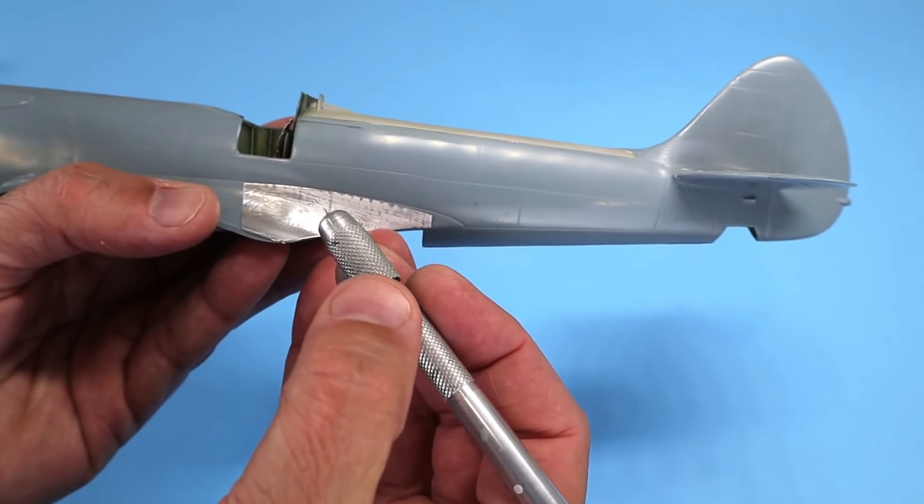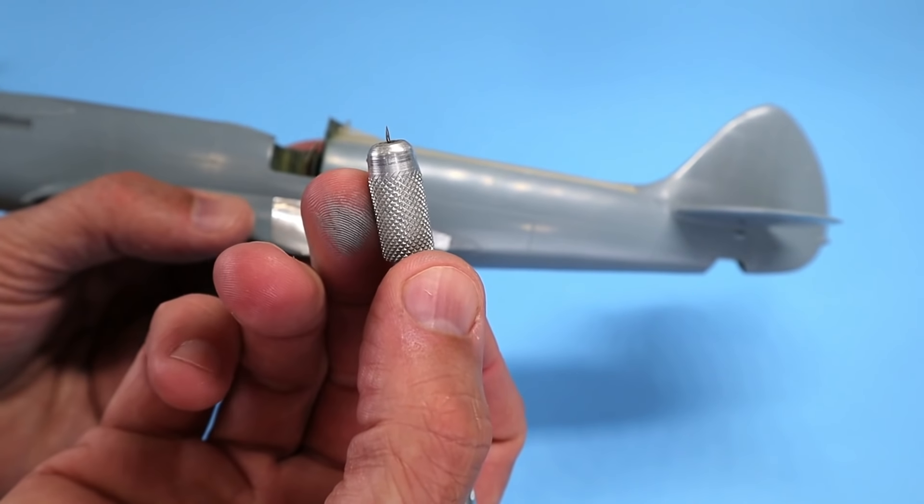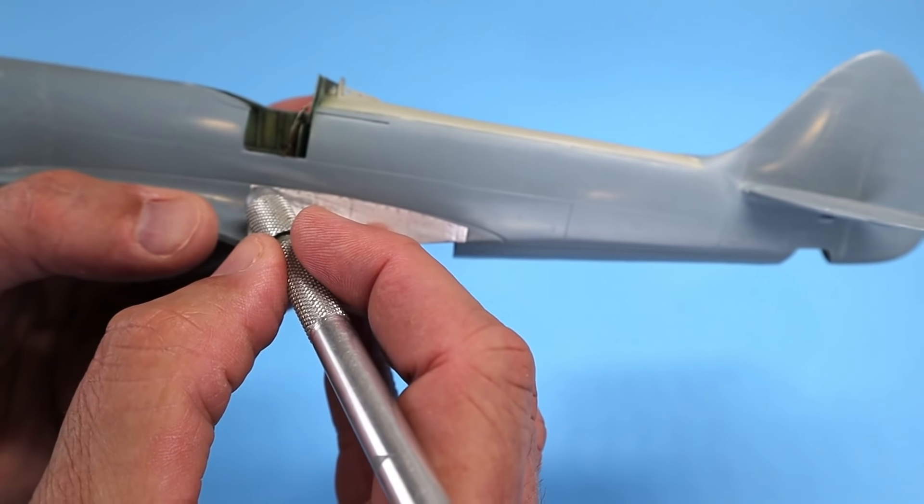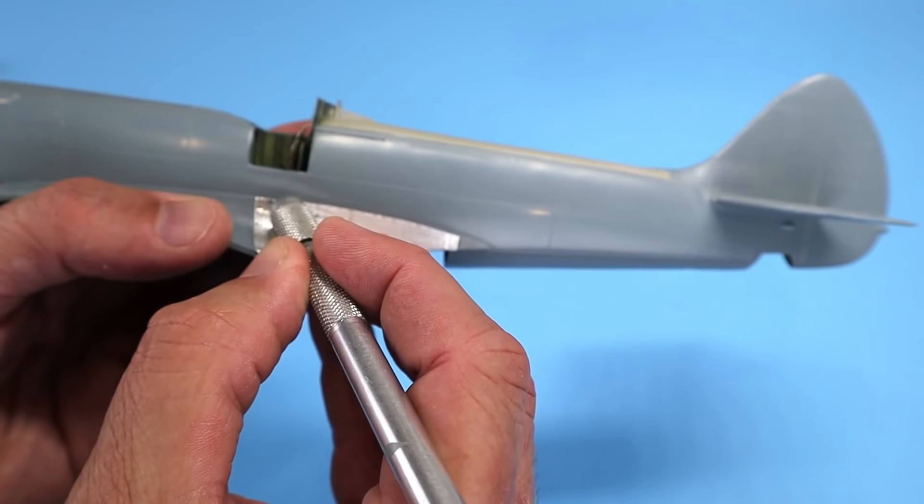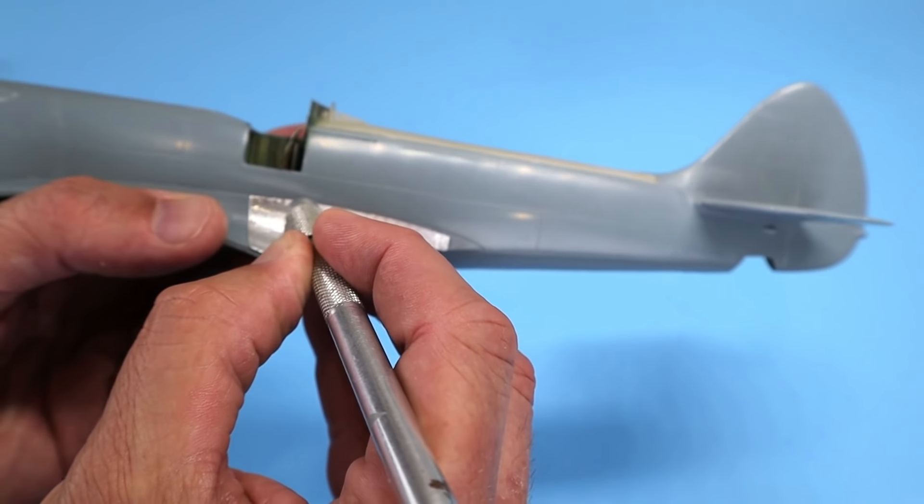And then I like to use a regular pin chucked up in a pin vise to come back in and punch in the rivet detail in accordance with the references, like so.